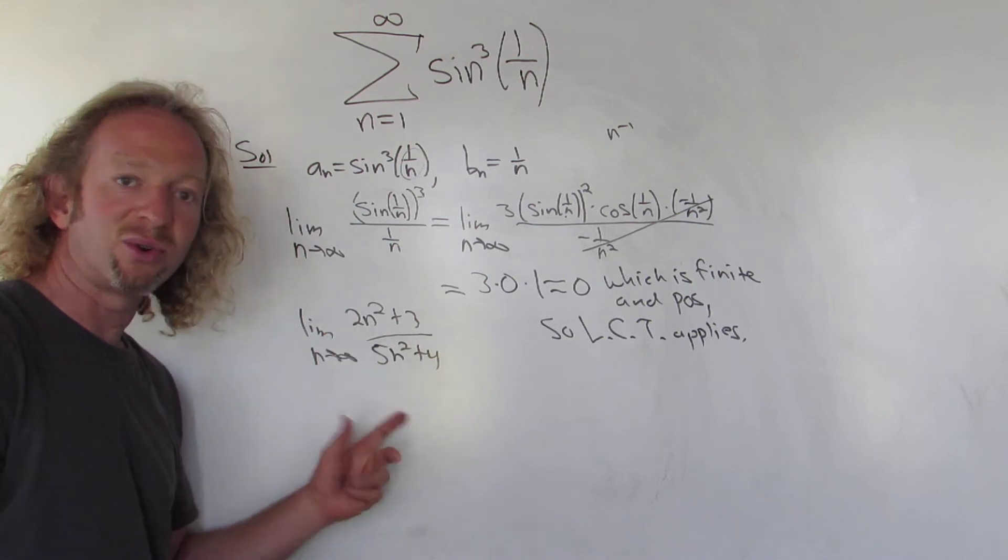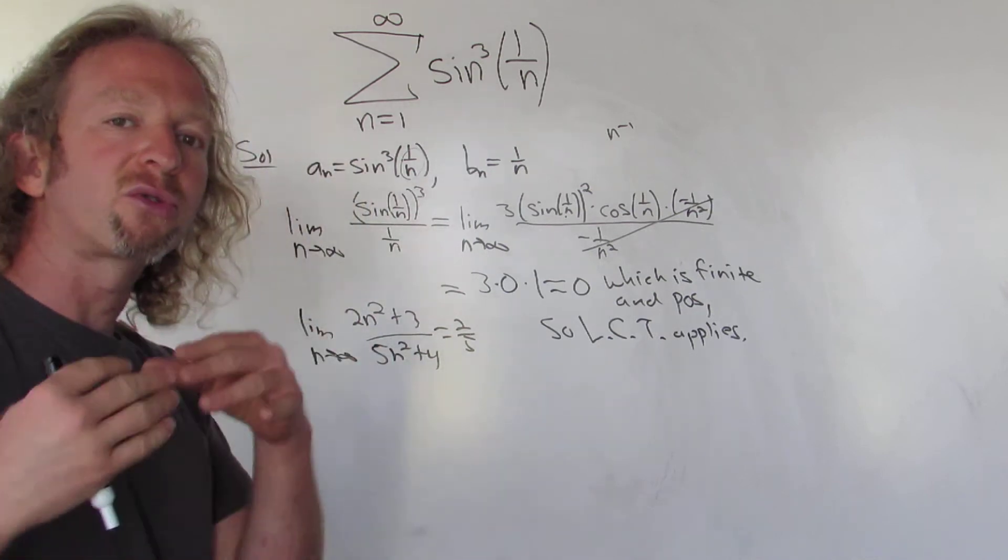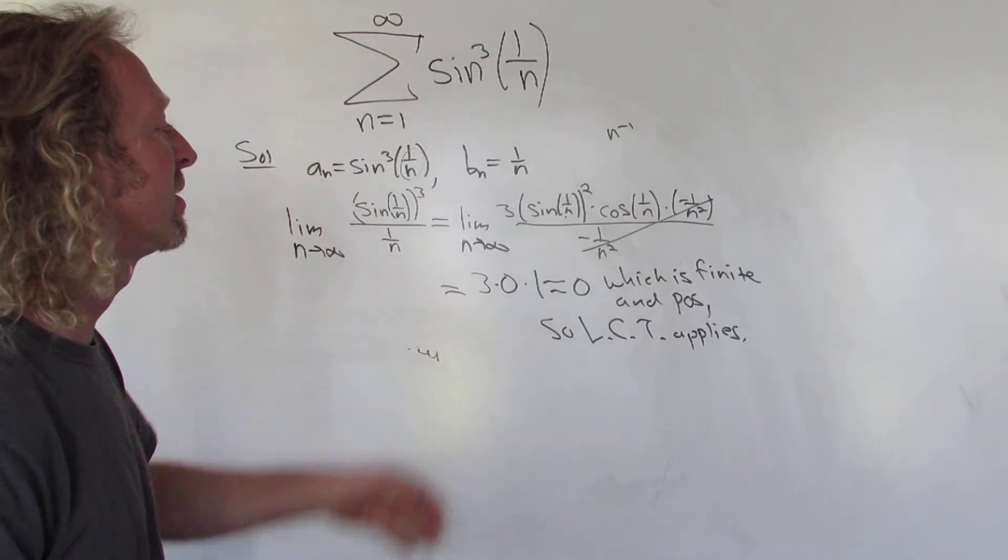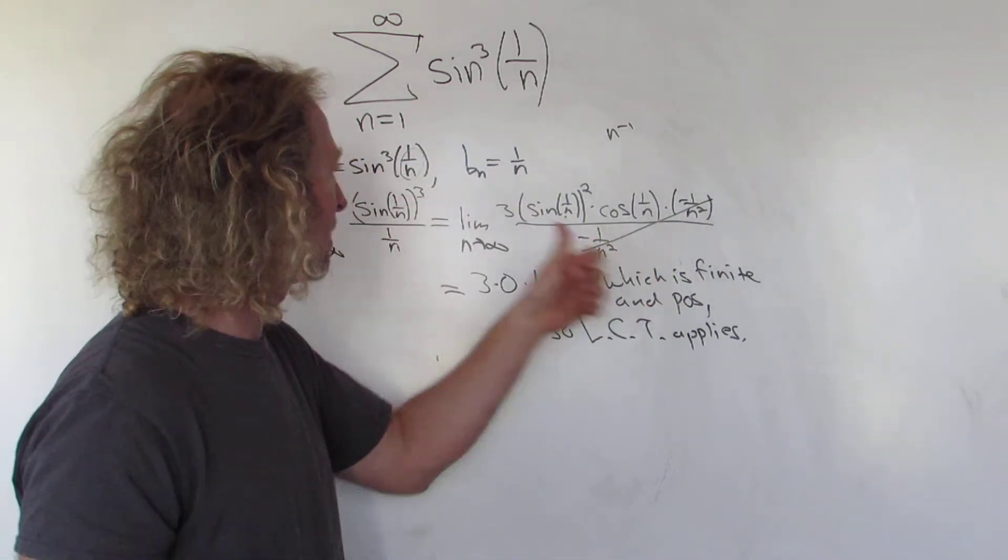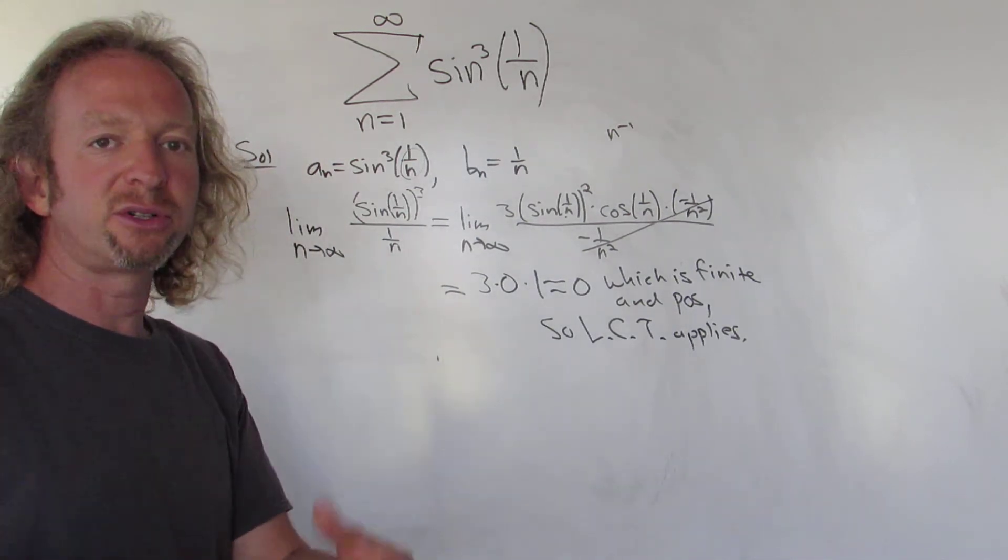And what does that say about these polynomials? Well, they're both quadratics. They both grow at the same rate. So whenever you take the limit here in limit comparison and you get a finite positive number, these both grow at the same rate. That means as a series, they will both converge or they will both diverge.